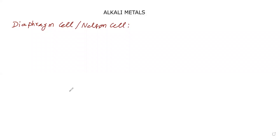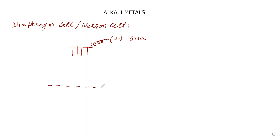In this electrolysis, the anode is graphite. This graphite rod is connected to positive charge and acts as the anode. The cathode is wire gauze — it is a metal, for example iron, made up of many holes just like a sieve.